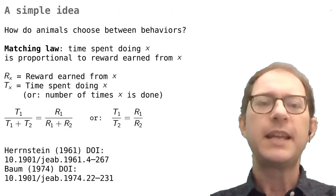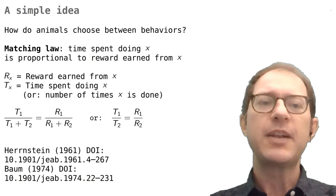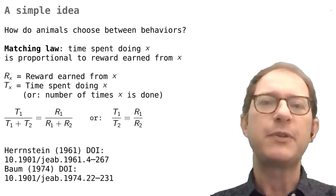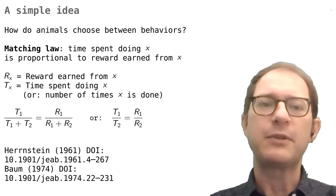The most important idea in animal decision-making in psychology is that of matching. It goes back to a 1961 paper by Richard Hernstein and to later refinements like William Baum's paper from 1974. You can see these papers here in the lower left corner.